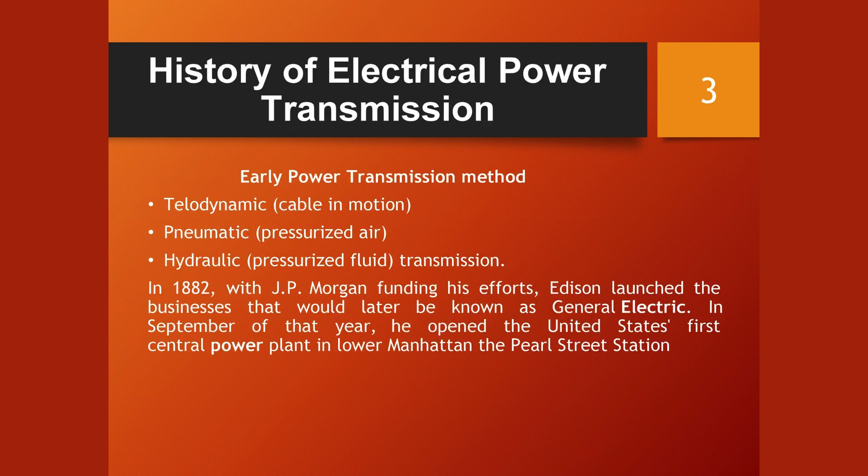The history of electrical power transmission includes early methods such as teledynamic, involving cable in motion; pneumatic, utilizing pressurized air; and hydraulic, involving pressurized fluid transmission. In 1882, supported by funding from J.P. Morgan, Edison initiated the enterprises that would later become General Electric. In September of the same year, he inaugurated the first central power plant in the United States, located in Lower Manhattan.